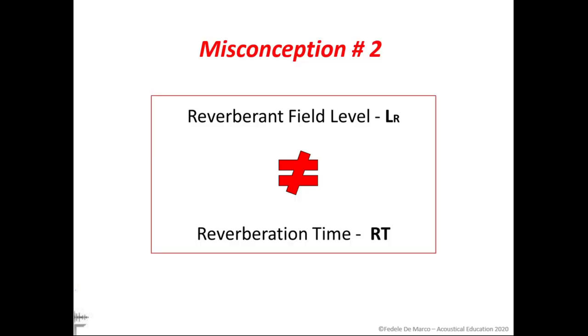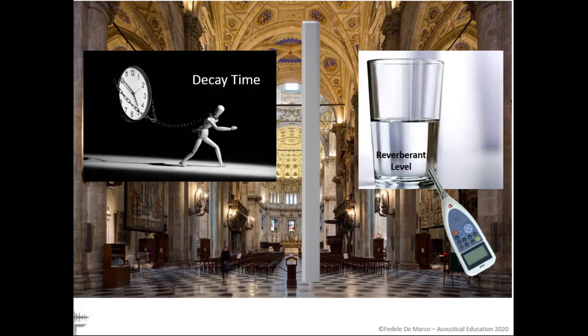Misconception number two: these two fundamental concepts are often confused — reverberation time and level of the reverberant field are not the same thing. The first is a decay time related to the duration of the decay of the room stimulated, for example, by an impulse source. The second, instead, is a level — a quantity — of a sound field: the reverberant field.